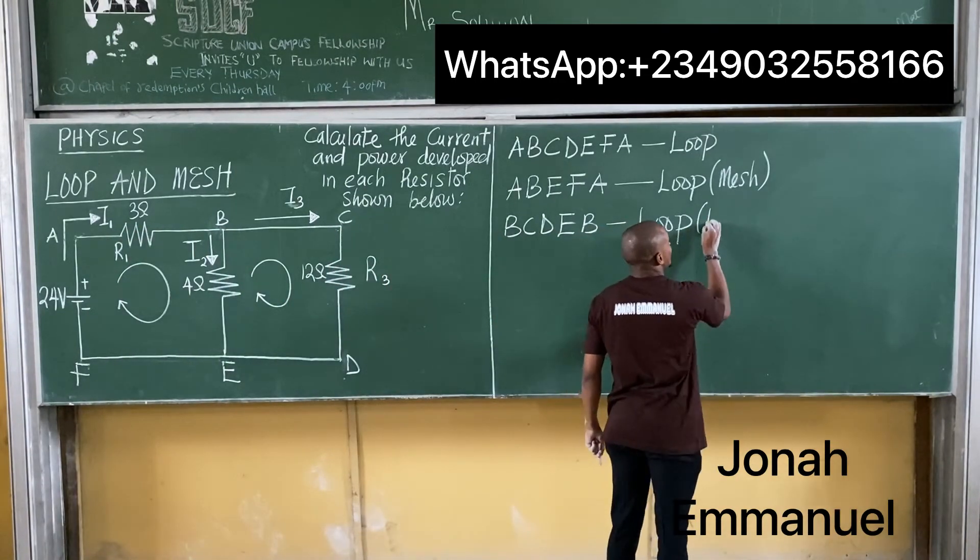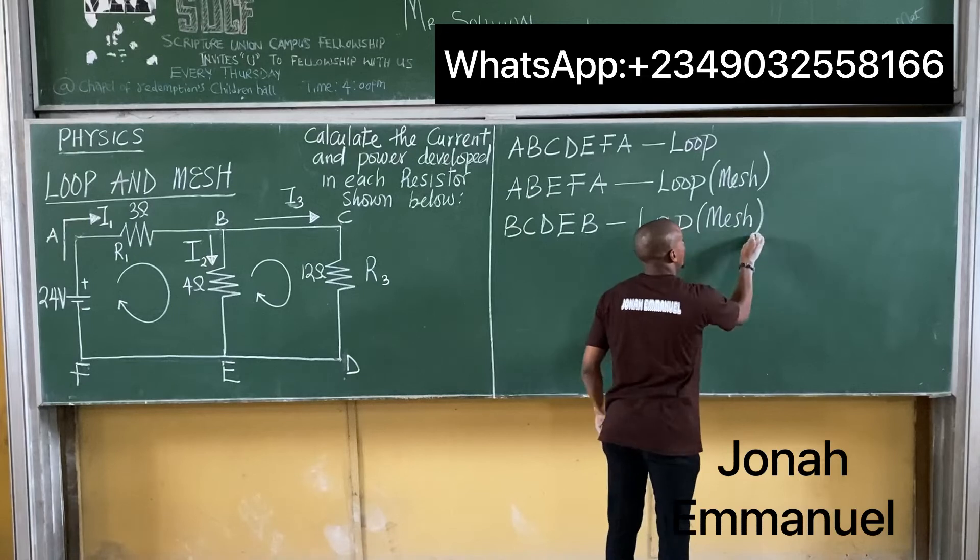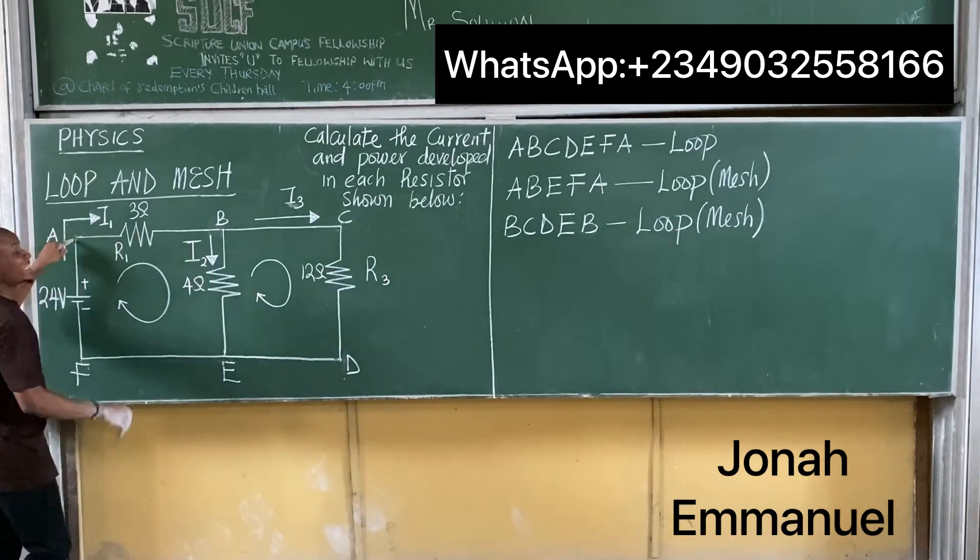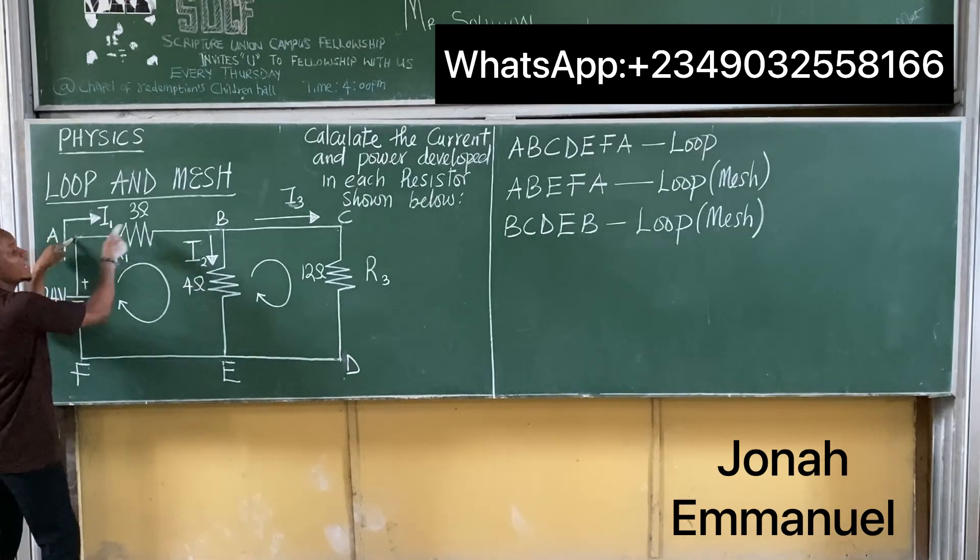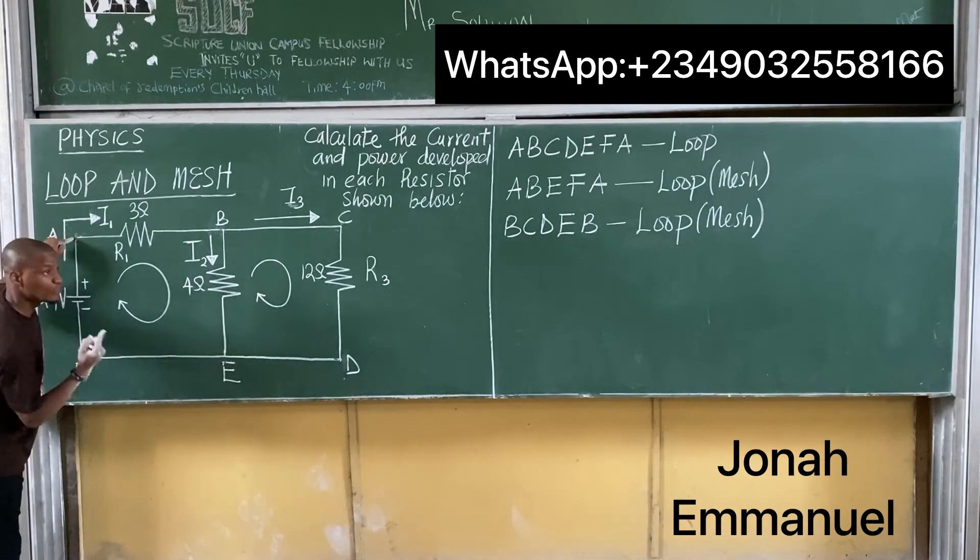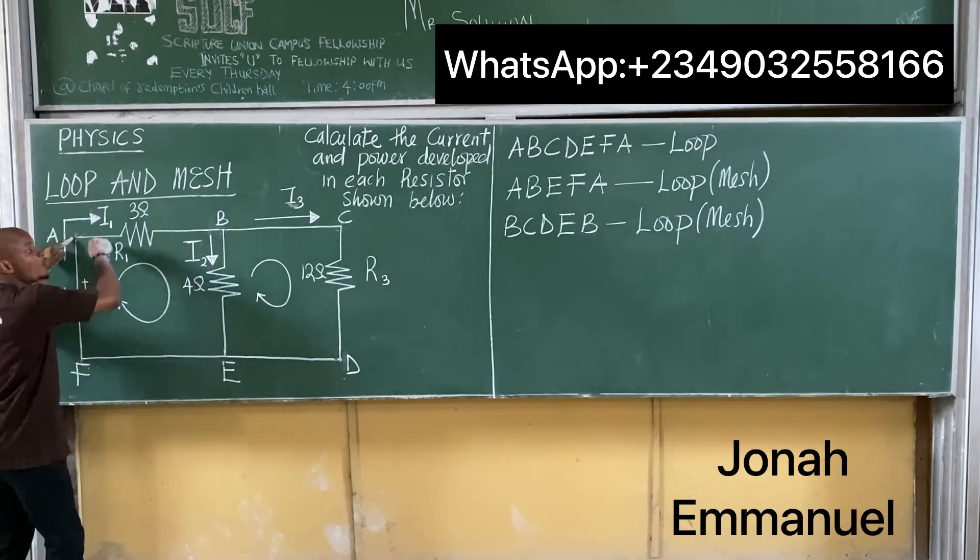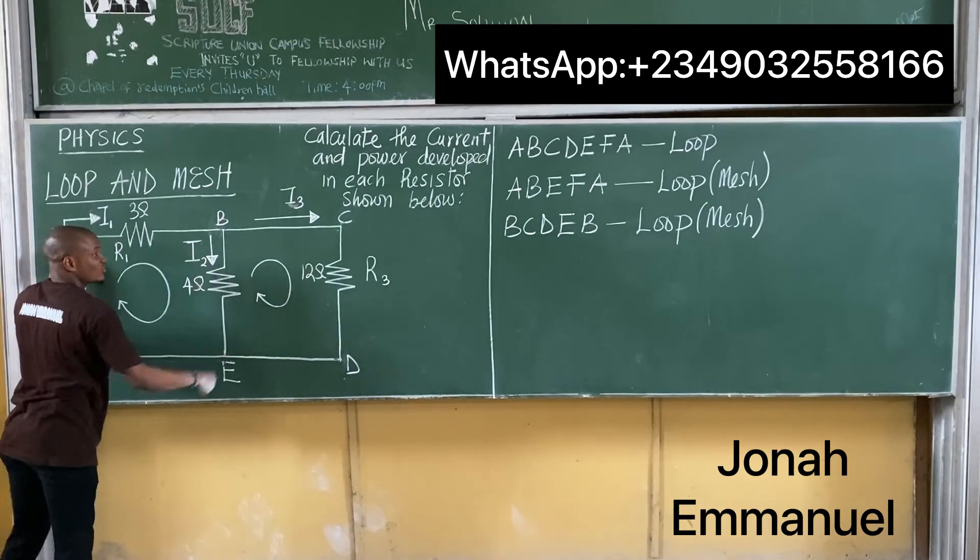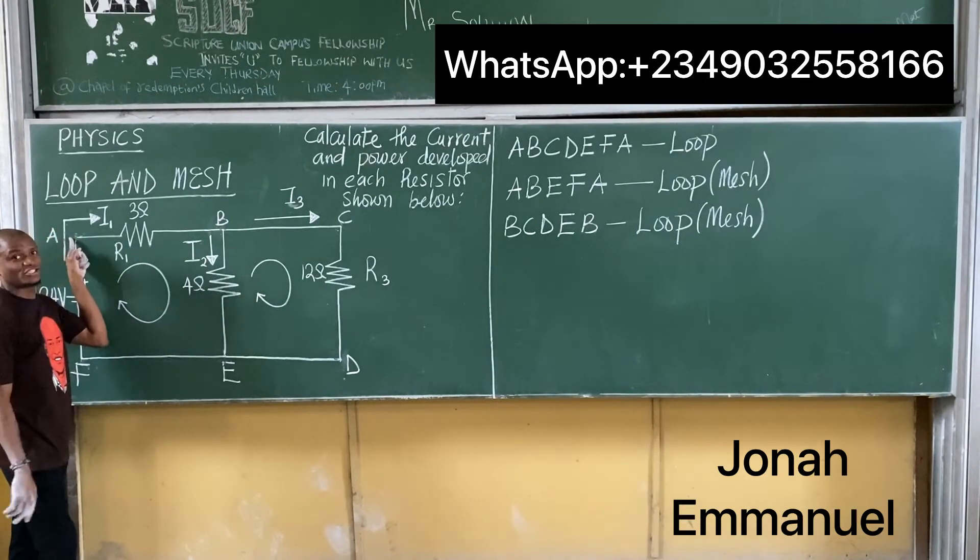So a mesh is a loop that contains no other loop within it. If I consider this one again, the biggest one there, A, B, C, D, E, F, A. It's a loop. But then again, within this loop, I still have other loops there. So what happens? It's not a mesh.